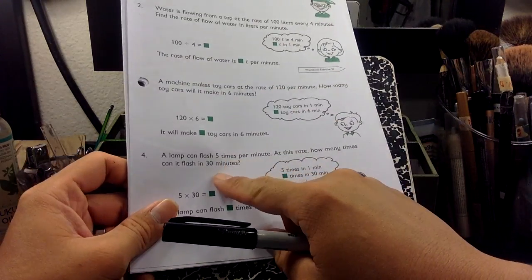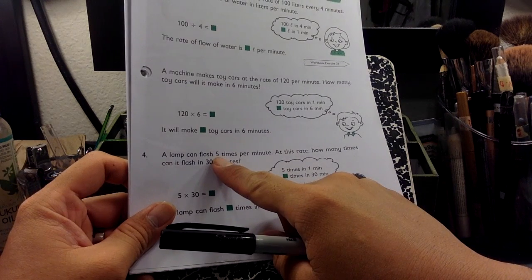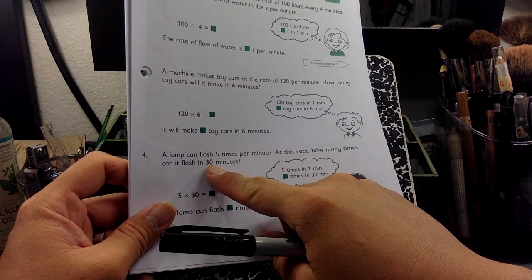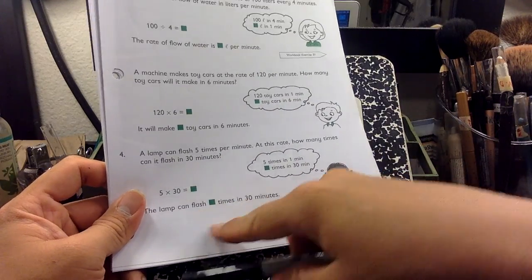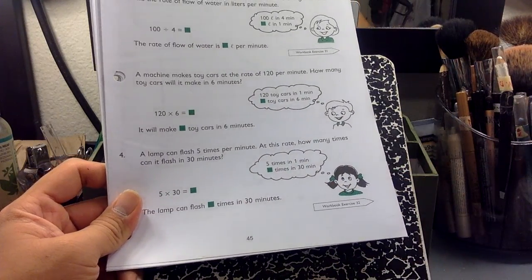You simply multiply five times 30. That would be five times three, which is 15. Add an extra zero. That would be 150. So in 30 minutes, this thing flashes 150 times.